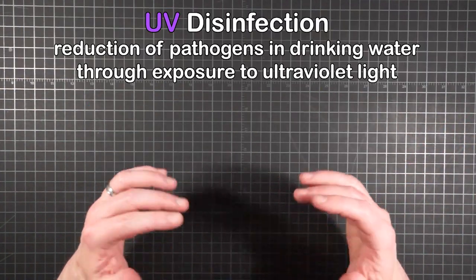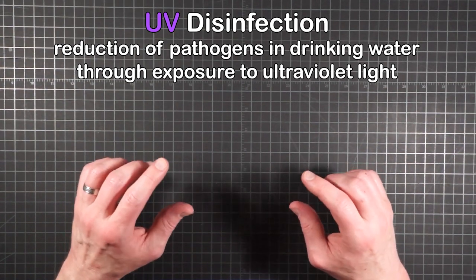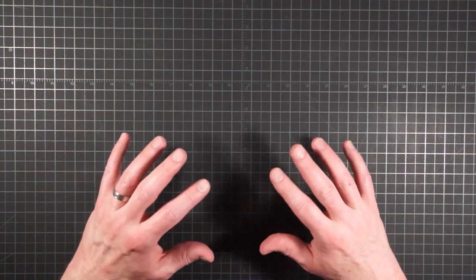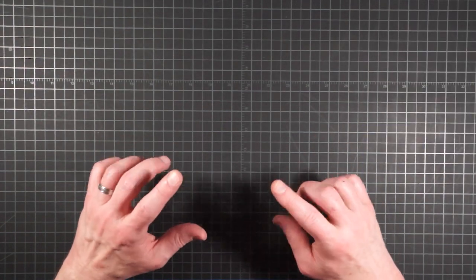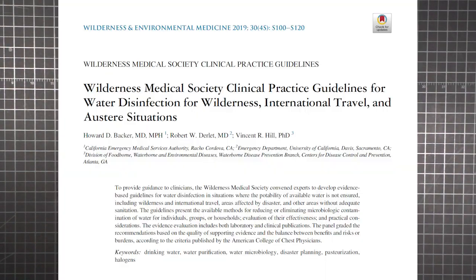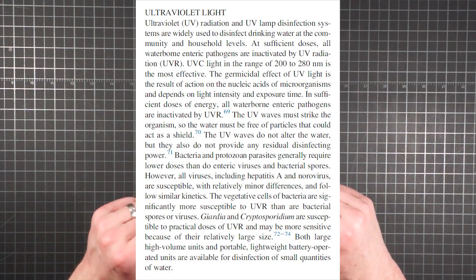This video is on UV disinfection, which is to say the reduction of pathogens in drinking water through exposure to ultraviolet light. That might sound a bit like science fiction, it also might not seem practical as a backcountry option, but the idea has been formally considered. In 2019, the Wilderness Medical Society convened a panel of experts to develop guidelines for water disinfection in remote settings. Ultraviolet light was one of the treatment methods discussed.